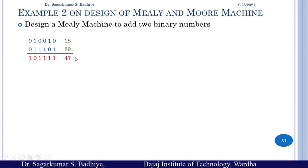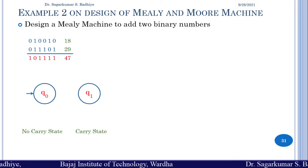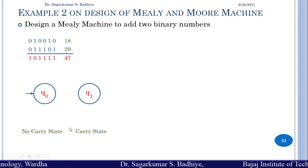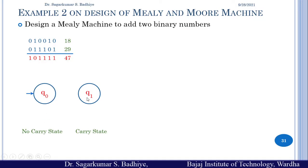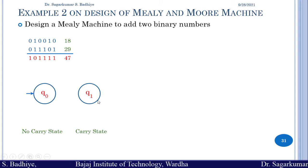For the design of this Mealy machine we will have two states. One state represents that there is a carry, and another represents there is no carry. State q0 is the no-carry state, and state q1 is the carry state. The input will be in pairs of bits.